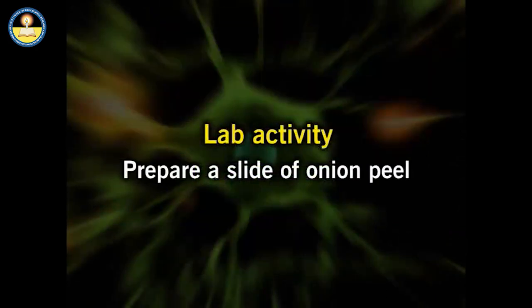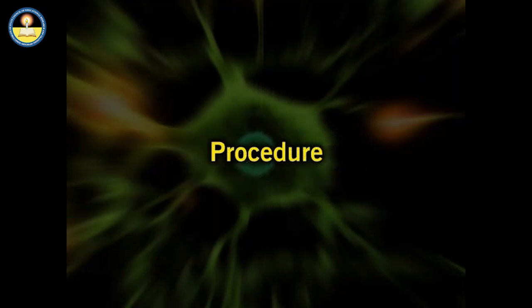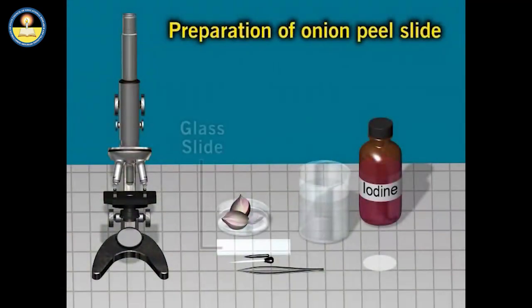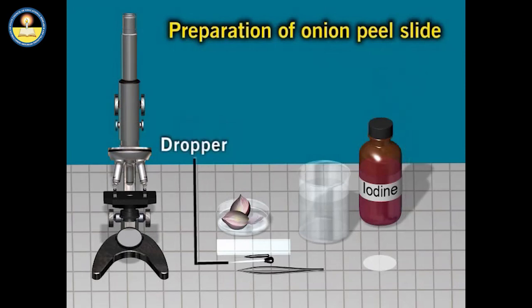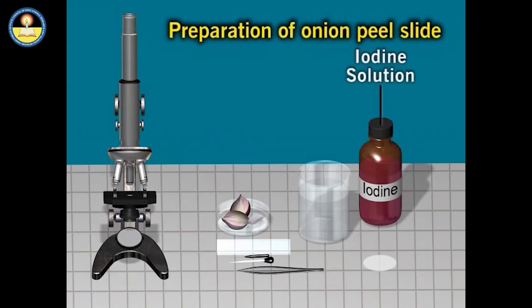Now let us do a small activity to prepare a fresh mount of plant tissue. The objective of this activity is to study that living organisms are made up of cells. For performing this activity, we need a glass slide, cover slip, dropper, microscope, needle, onion, iodine solution, and forceps.